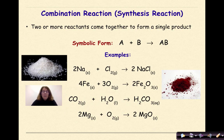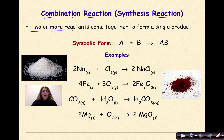The first type of chemical reaction that we're going to look at is the combination reaction, otherwise known as a synthesis reaction because we're going to be synthesizing something. Specifically, this is when two or more reactants come together to form a single product. Symbolically, we're going to see this as A plus B yields AB as our product.